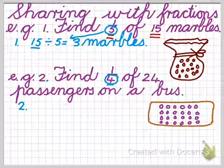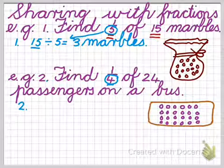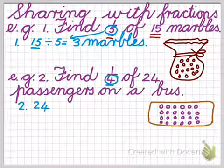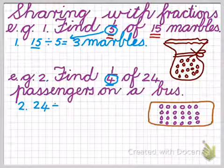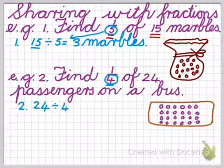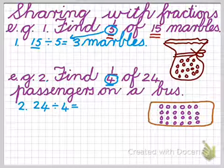We're going to then divide by, that's right, by four. So we're going to say 24 passengers divided by four. And that then is going to give us, let's think of our tables again.